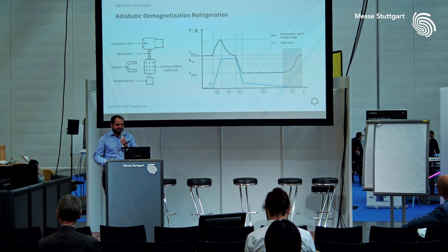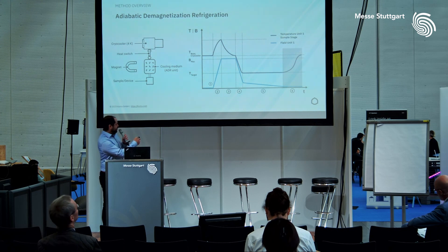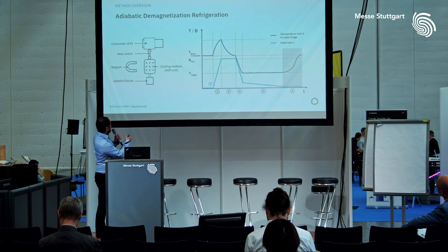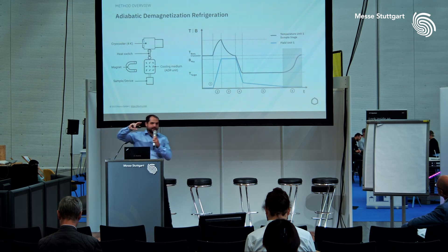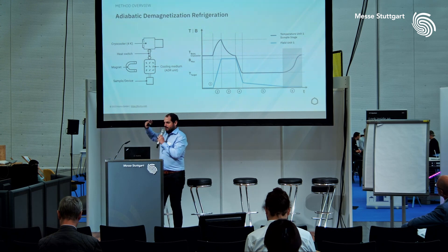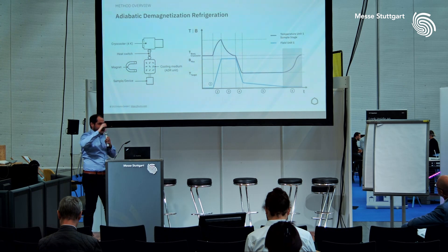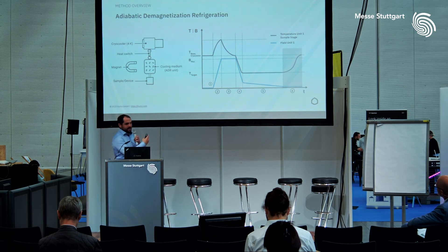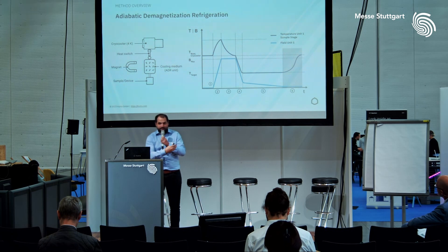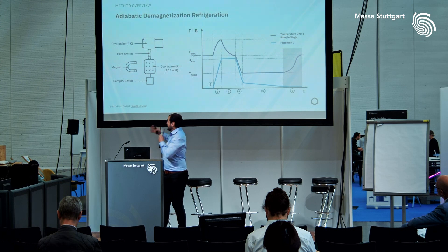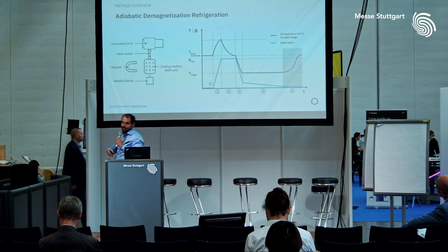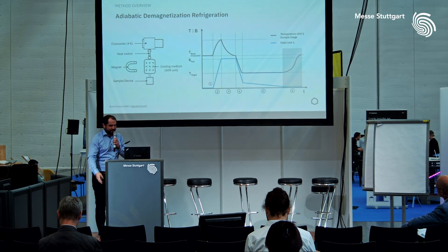Adiabatic demagnetization refrigeration relies on a cryocooler to cool down to four Kelvin, a heat switch that allows us to thermally connect or disconnect our sample and ADR unit from the thermal bath, a magnet — typically an electromagnet — and a cooling unit which is typically a paramagnet.